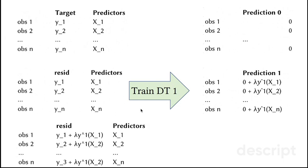So, we can get the new residuals. The new residuals would be the old residuals, y1, for example, for the first observation minus the prediction minus lambda, y1, x1. So, basically, the prediction for the first observation by the first decision tree shrunk by parameter lambda.